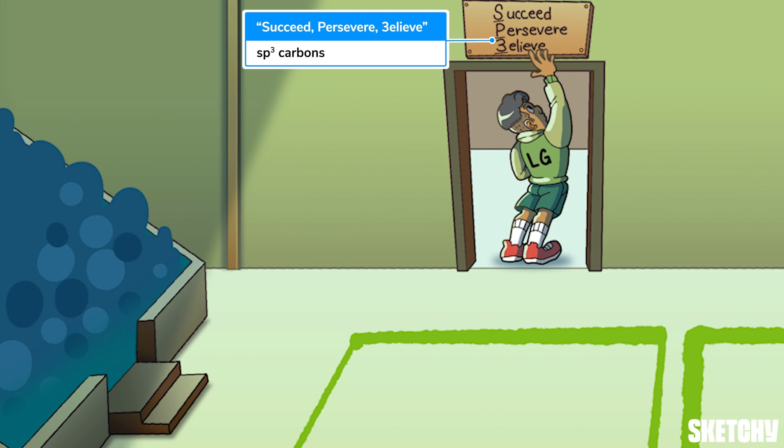This dodgeball departer is touching the 'Succeed, Persevere, Believe, or Leave' sign. That's for two reasons: first for good luck, and second because those initials — SP3 — should remind you of sp3-hybridized carbon atoms. All the substitution and elimination reactions we're going to see here — SN1, SN2, E1, and E2 — happen at sp3-hybridized carbons with attached leaving groups.